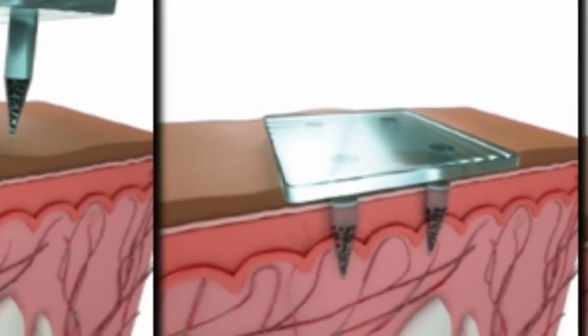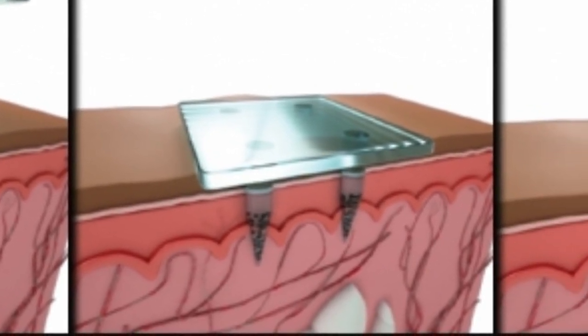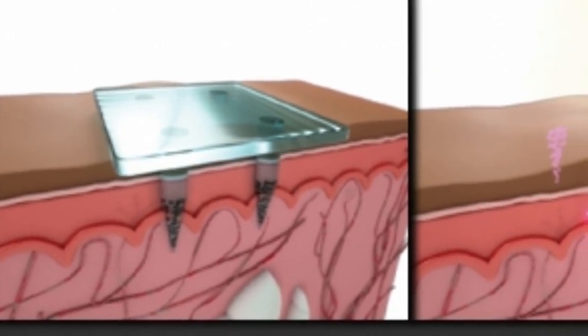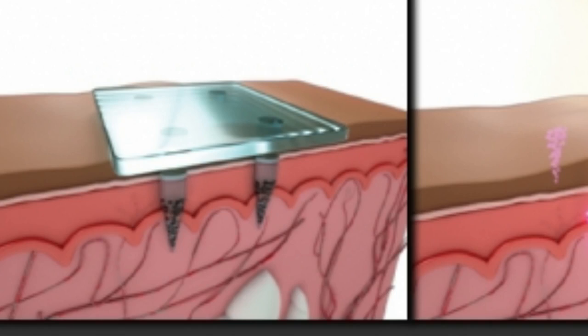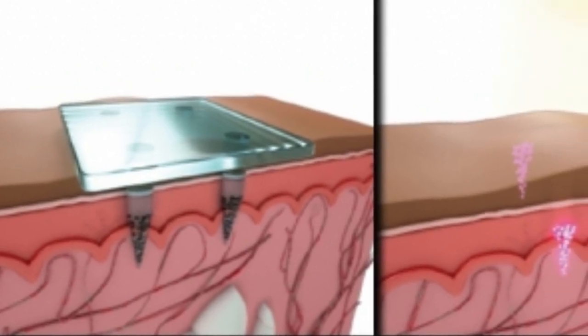The microneedles used in this study are made from a mixture of dissolvable sugar and a polymer called PVA, as well as the quantum dot dye and the vaccine. When the patch is applied to the skin, the microneedles, which are 1.5 mm long, partially dissolve, releasing their payload within about two minutes.